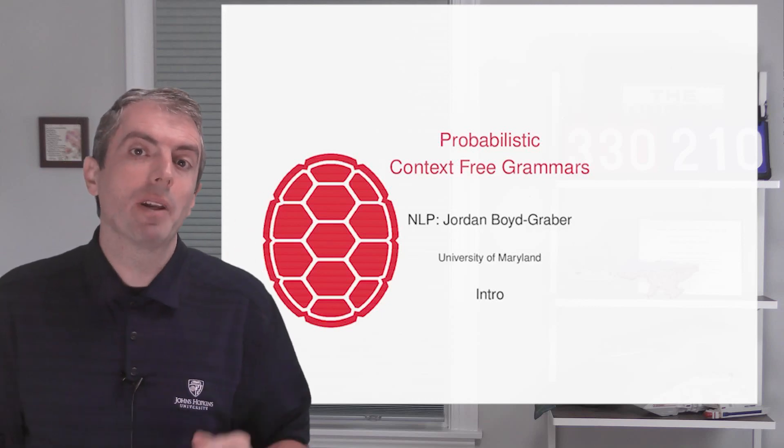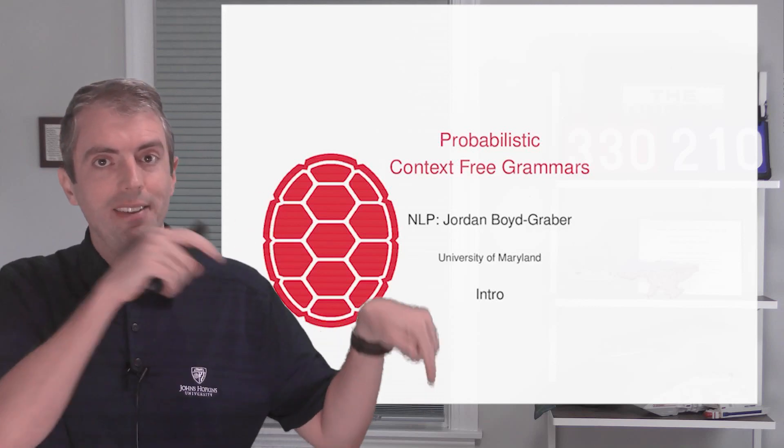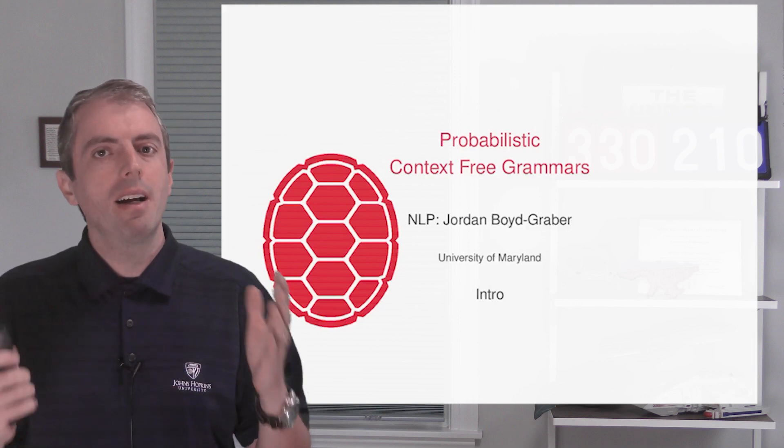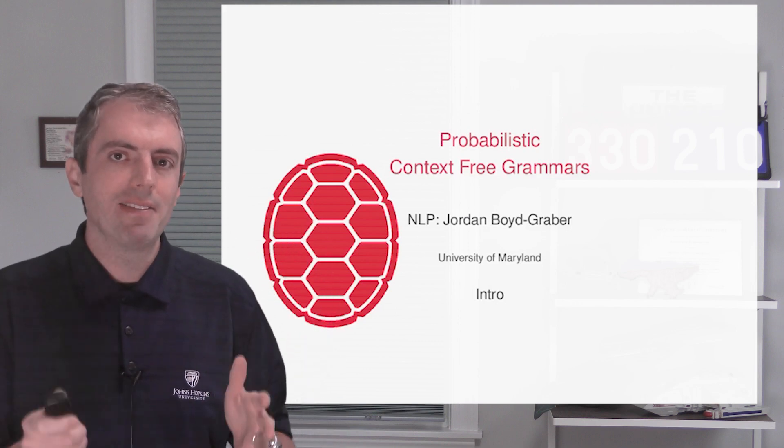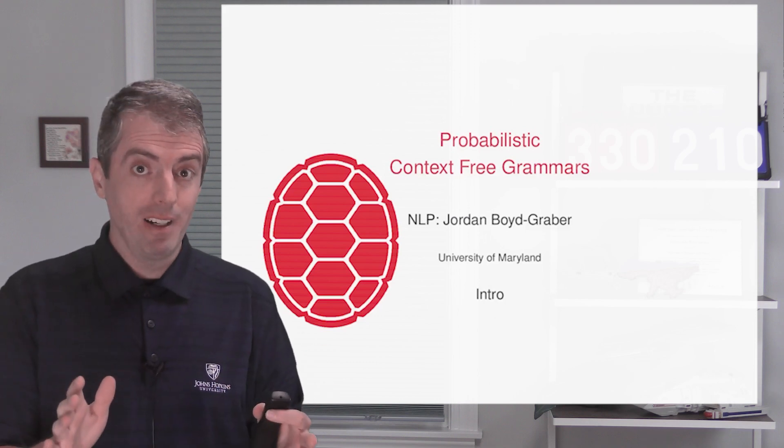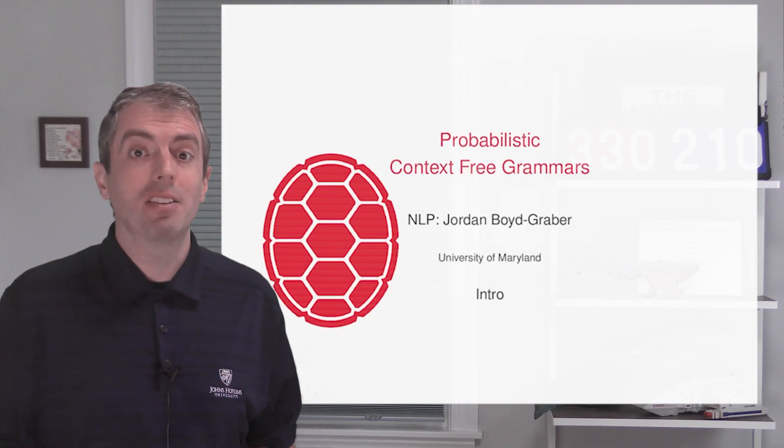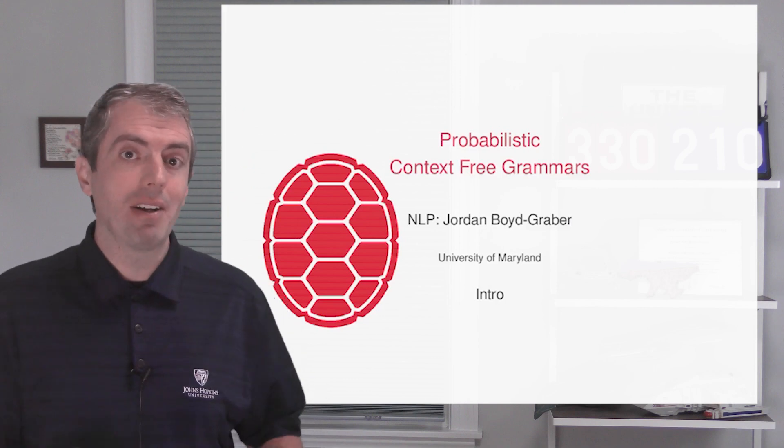If you're watching this video, I'm assuming you know what a context-free grammar is. If not, check out the link in the description. If you watched the previous video, you know that a context-free grammar is a way of checking if a sentence is grammatical. Where does the grammar come from? And when a sentence is ambiguous, how do you know which interpretation you should actually prefer? That's what we're going to talk about in this video.